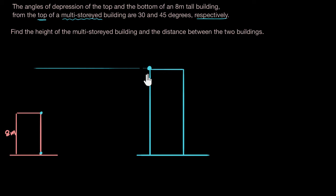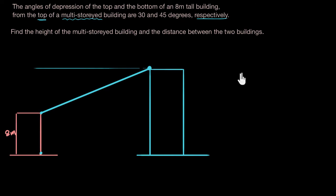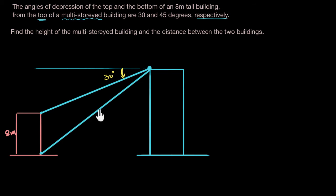It would be really weird for it to be the other way, so anyway — for the top it's 30 degrees, which means this angle is 30 degrees. And I need to go to the bottom: this line is the line of sight to the bottom, and that angle will be 45 degrees. Got it — that's all that's given to me.